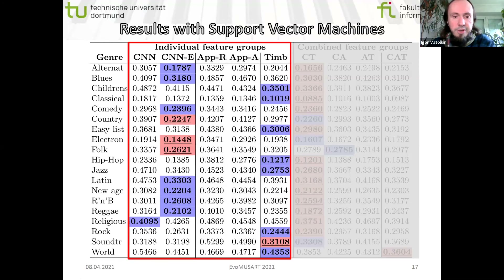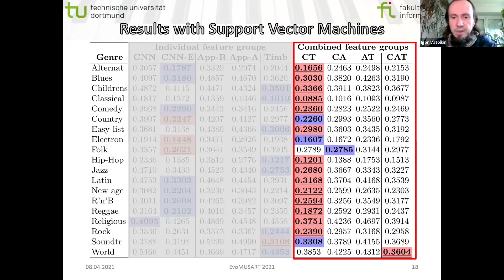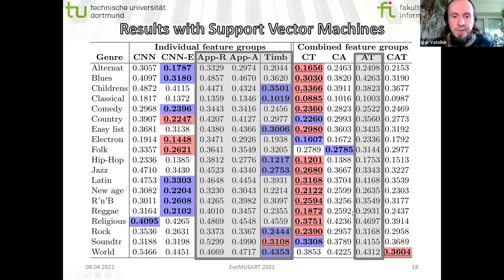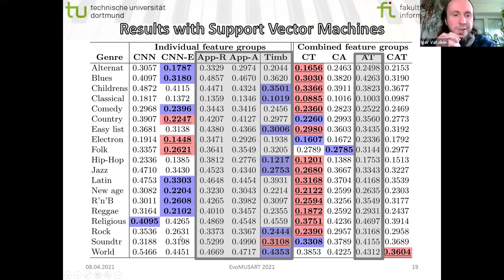For support vector machines, individual feature group results look very similar — for 11 of all genres, CNN-based features performed better and contributed to smaller errors. For combined feature groups it looks even better: only one genre, folk music, had results where the best combined set also included CNN features. Without CNN features, no genre achieved the smallest error. Looking at the ever-best results, only one genre — the complex category of soundtracks and world music — had CNN features not contributing to the best result.